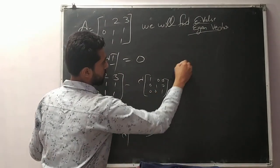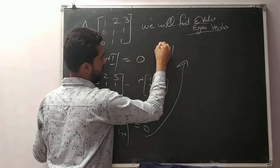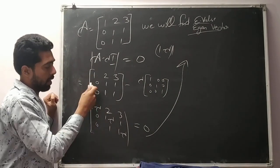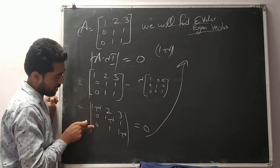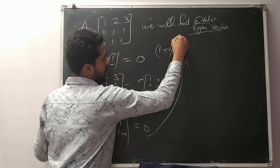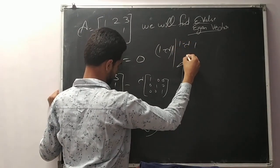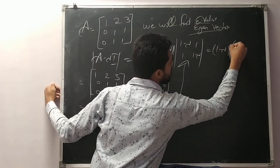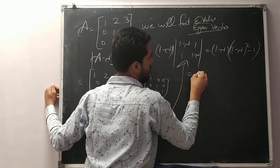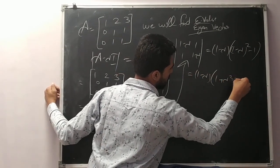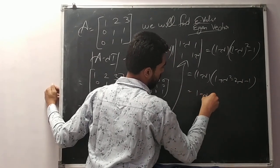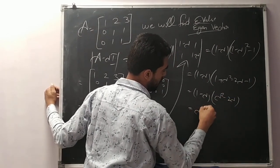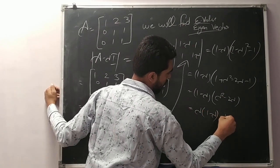How to find 1 minus lambda? We know how to find the determinant. I will expand the first column because those entries are 0. This gives me (1 minus lambda) times [(1 minus lambda) squared minus 1], which simplifies to lambda squared minus 2 lambda, meaning lambda times (1 minus lambda) times (lambda minus 2).